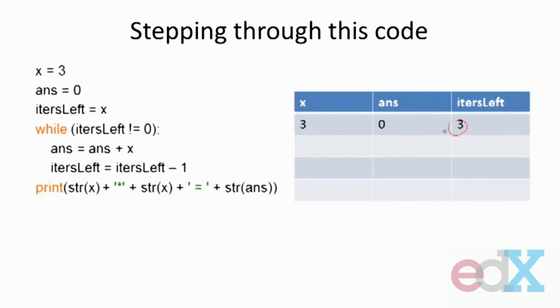The while loop says, test to see if this is equal to zero. Since it is not equal to zero, the test is true. And therefore, I take the current value of answer, the current value of x, add them together, and rebind that to answer. I then take itersLeft, subtract one from it, and rebind that to itersLeft. So I've decremented itersLeft and I've incremented answer.